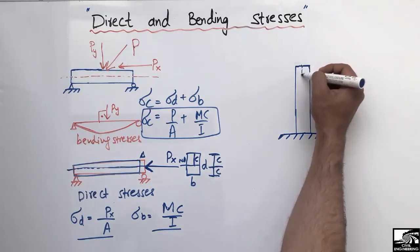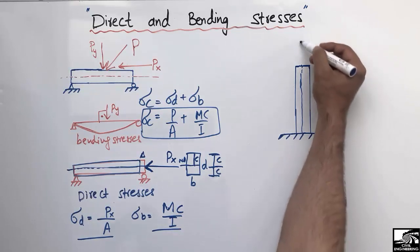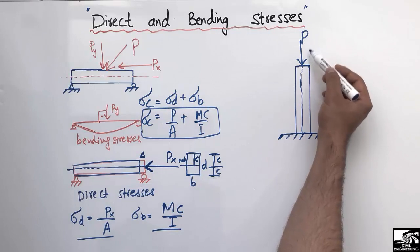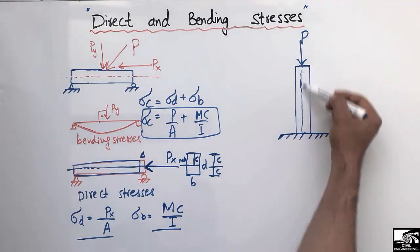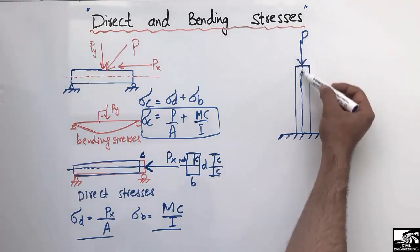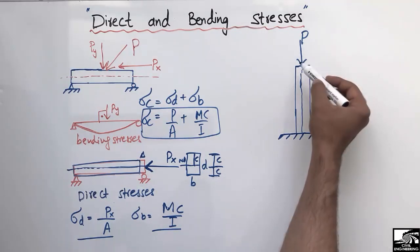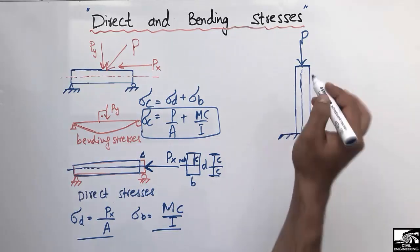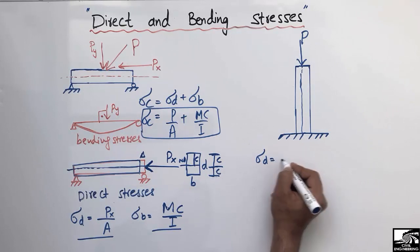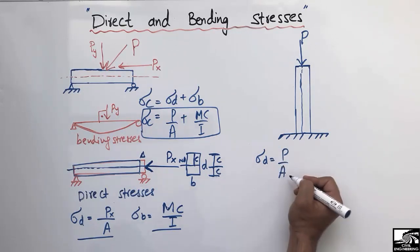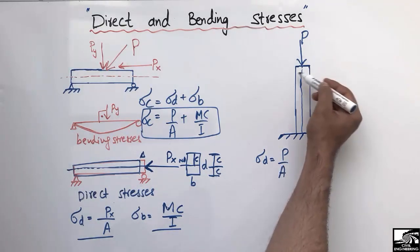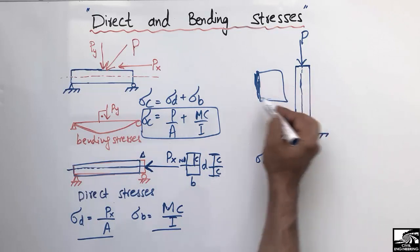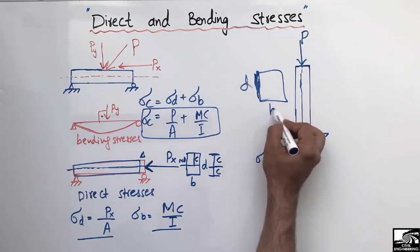Similarly, let's consider a column. If the load P acts at the center of the column — along its axis — this is a concentric load. The stresses created are called direct stresses or axial stresses, and again sigma_d = P/A, where A is the cross-sectional area of the column with depth d and width b.